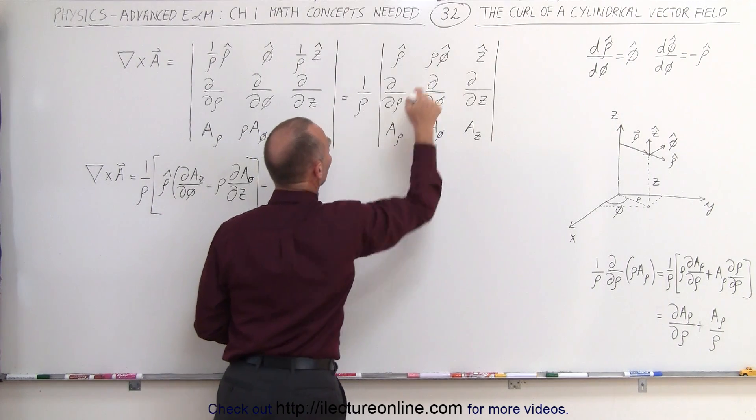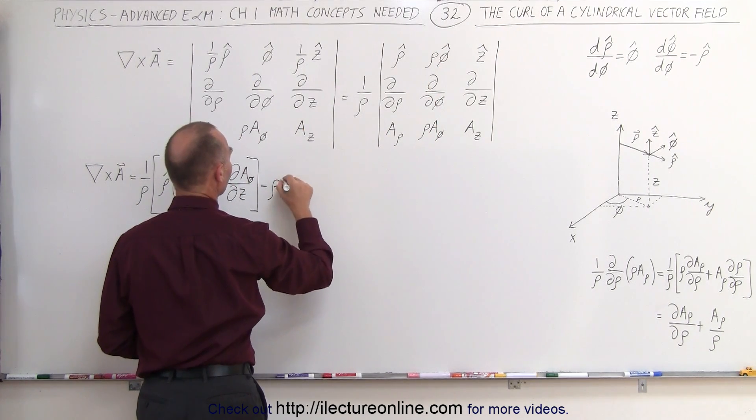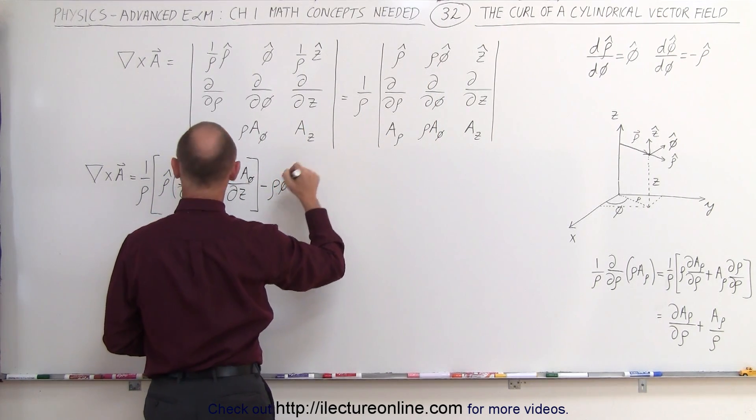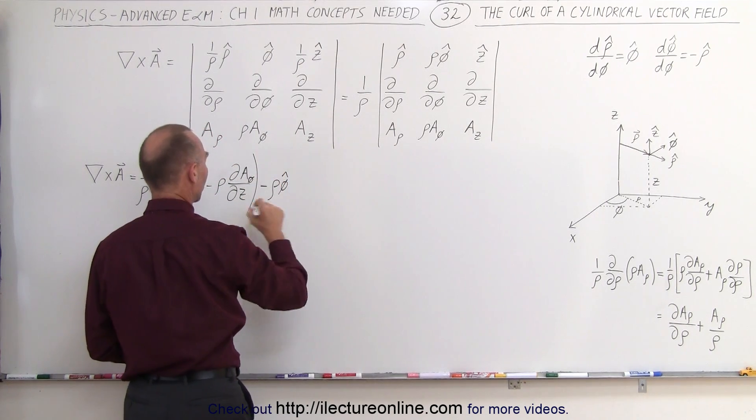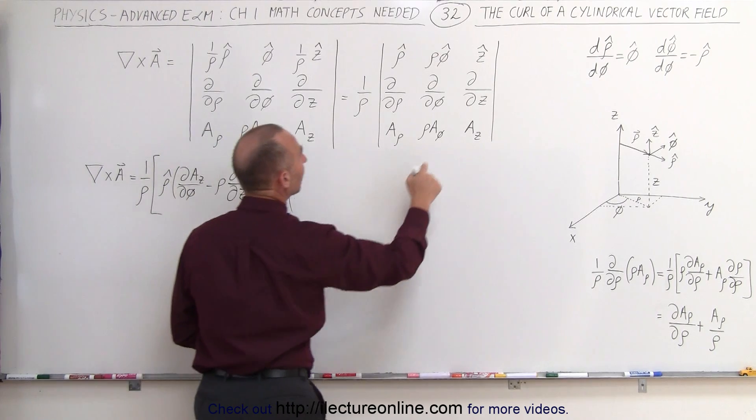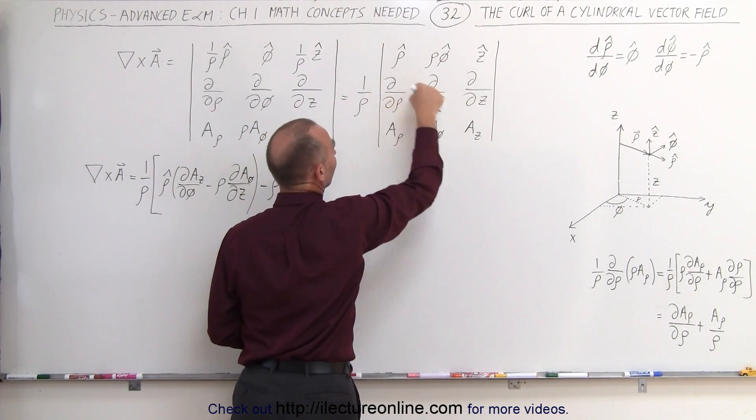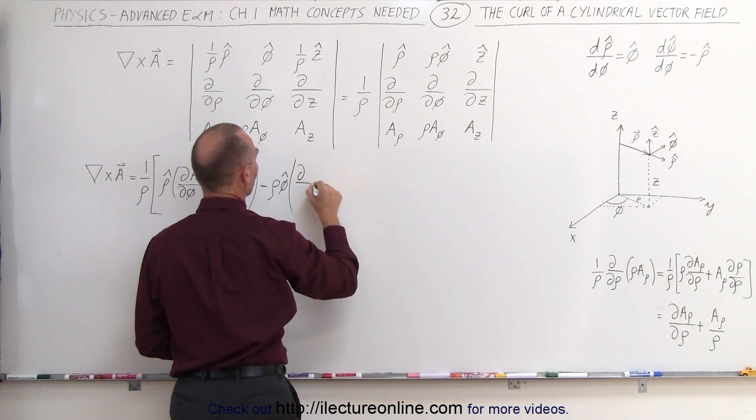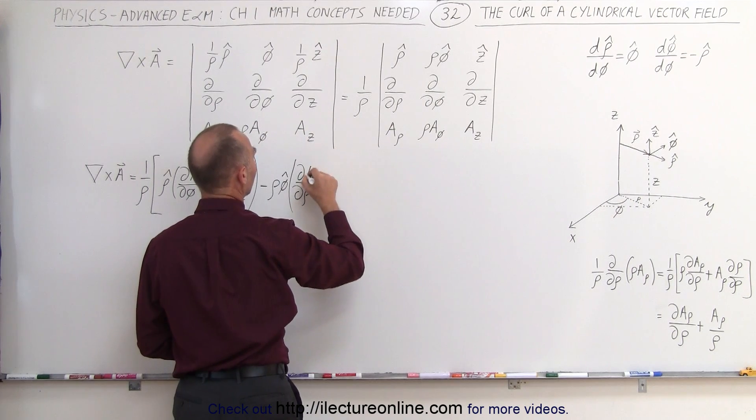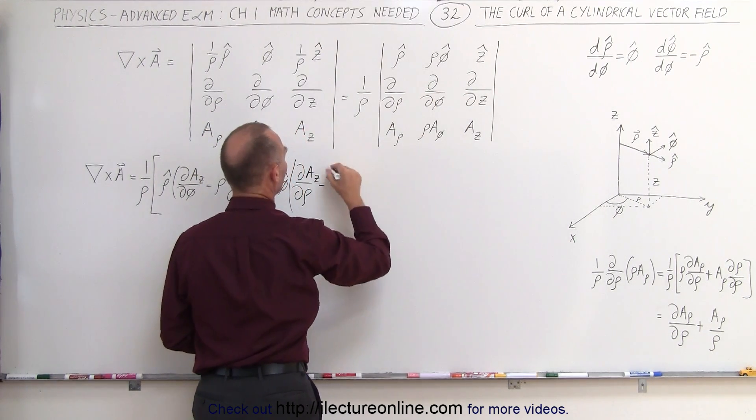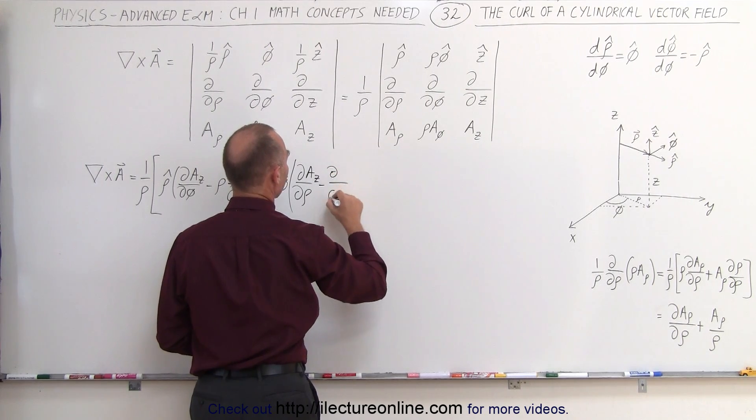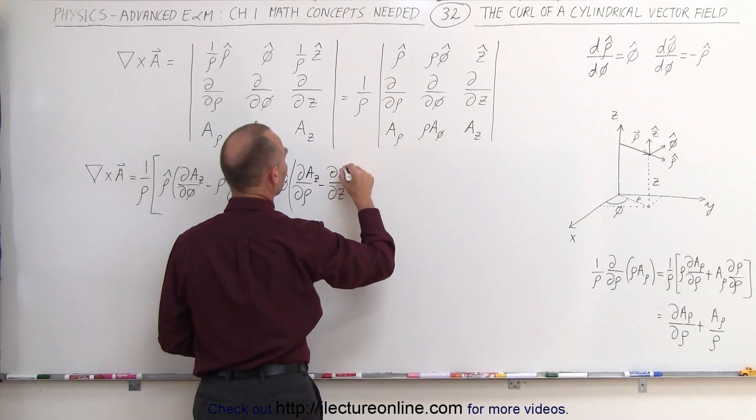Minus row times the phi unit vector times, and I don't want a bracket here, I actually want a parenthesis, the bracket will close the whole thing, so parenthesis open, so we have this term right here, now this times this, we have the partial with respect to row of a sub z minus the partial with respect to z of a sub row.